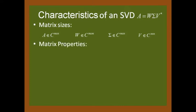Now let's look into the matrix properties. The matrices W and V are orthogonal. This means that multiplying W by its adjoint, or W adjoint times W, will yield the identity matrix. The same holds for V.